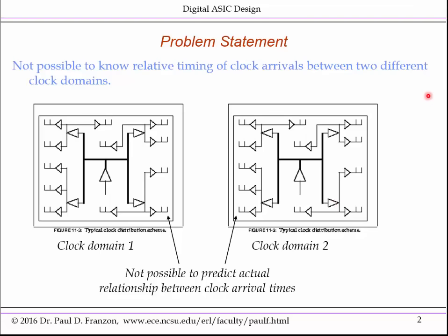This is a rough illustration of the problem. Let's say a chip has two clocks distributed on it, and some signals have to cross between these two clocks. You might recall that there's a lot of random variation in the delay from the clock source to the clock leaves. You've got different process conditions leading to fast and slow buffers, and different temperatures leading to fast or slow buffers. Thus, even if these two clocks were the same, you'd really have no idea of the phase relationship — that is, the relative arrival time of clock edges at nodes in different clock domains that you're trying to communicate between.